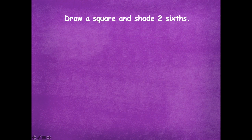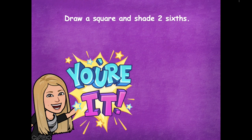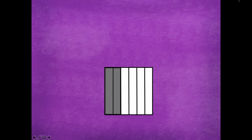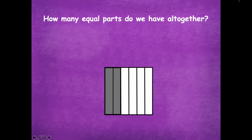Now draw a square and shade two-sixths of your square. Pause the video, draw your square and shade two-sixths, then click play when you're ready. Here is my square. I shaded two-sixths, so how many equal parts do we have altogether? Six — because splitting into sixths means six equal parts. What fraction is shaded? Two-sixths.